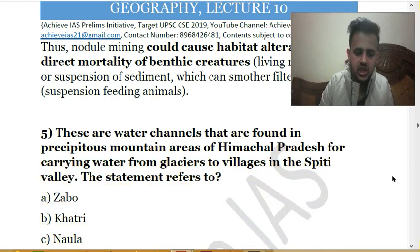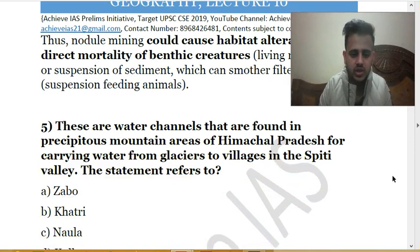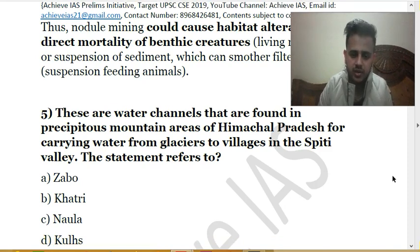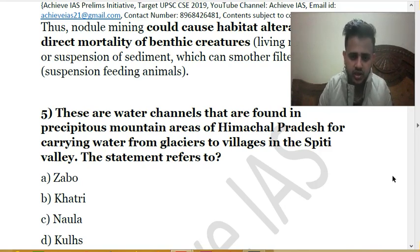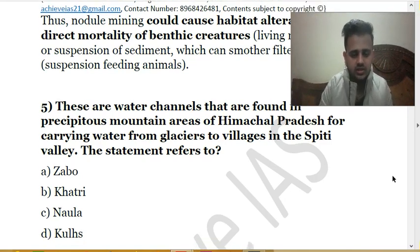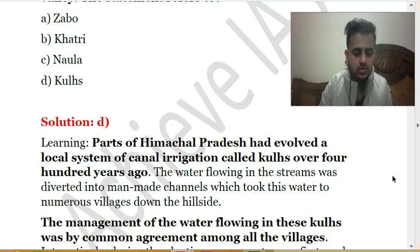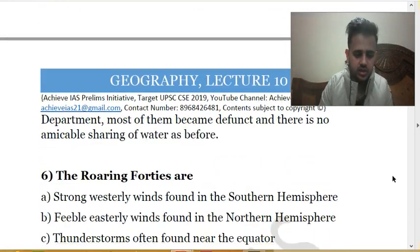The fifth question: these are water channels found in precipitous mountain areas of Himachal Pradesh for carrying water from glaciers to villages in the Spiti Valley. What are these channels called? Options are Zabo, Khatri, Nola, or Kuls. The answer is D — Kuls. This part of Himachal Pradesh evolved this local system of canal irrigation called Kuls over 400 years.